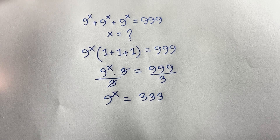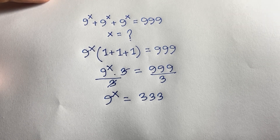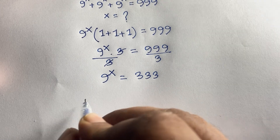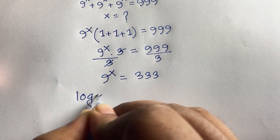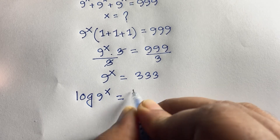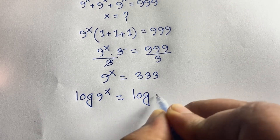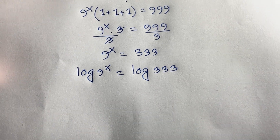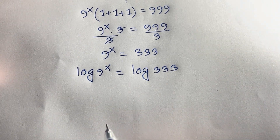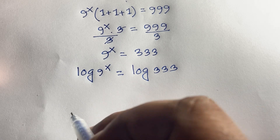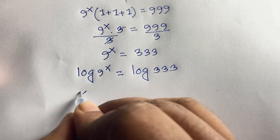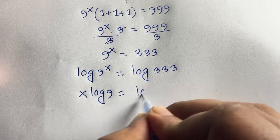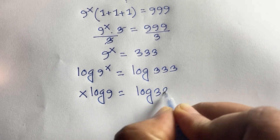Now, how to find out the value of x in this exponential equation? If I apply the natural log to both sides — log of 9 to the power x equals log of 333 — then according to logarithm rules, the exponent x moves to the front. So it becomes x times log 9 is equal to log 333.